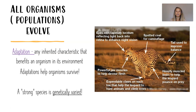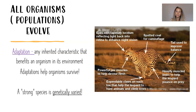Our final characteristic of life is that all organisms — or more precisely, populations — evolve. A single organism doesn't evolve; it's the whole species or the whole population that evolves. Adaptations are any inherited characteristics that benefit an organism in its environment. Adaptations help organisms survive — for example, a cheetah has various adaptations that help it survive within its environment, all as a result of natural selection through evolution. A strong species is one that has genetic variation, because they can withstand a changing environment through natural selection. If they're all genetically the same, they're all susceptible to the same things.